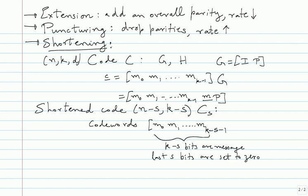Shortening is best thought of as shortening the message. Since we always work with a systematic version, shortening the message also shortens the code word. If you pick S bits of your message and set them to 0, the corresponding S bits in the code word also become 0, and you drop those from the transmitted block. The parameters N - S and K - S are clear from this description.